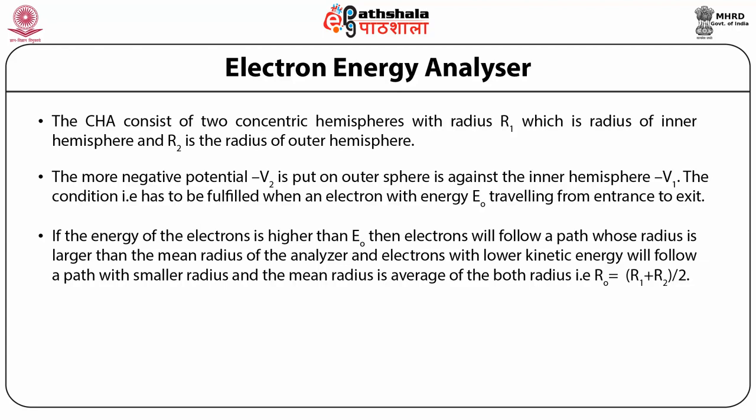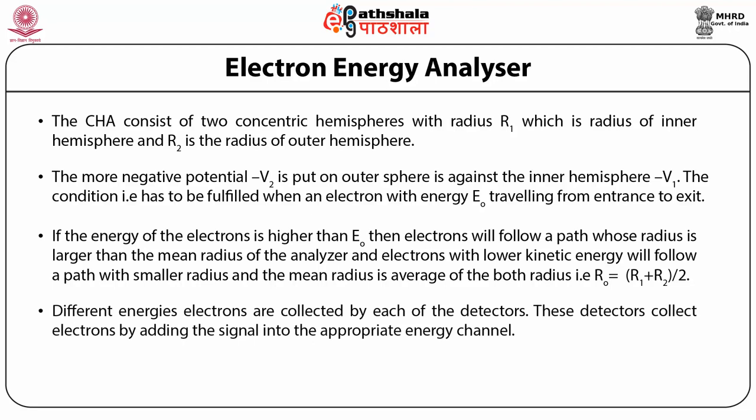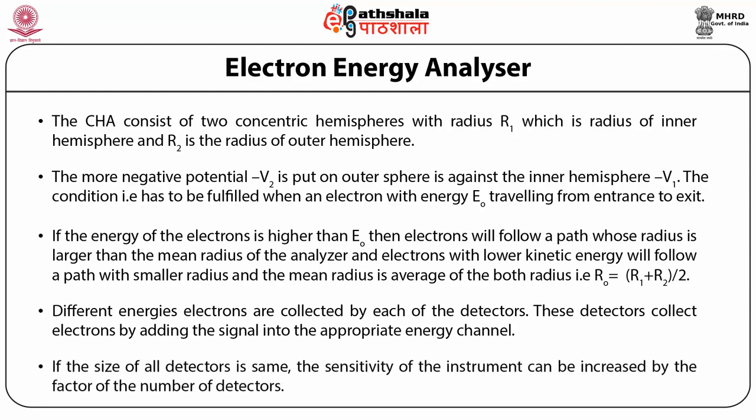If the energy of the electron is higher than E0, electrons will follow a path whose radius is larger than the mean radius of the analyzer. Electrons with lower kinetic energy will follow a path with a smaller radius. At the output plane, a number of detectors are provided. Different energy electrons are collected by each detector, adding the signal into the appropriate energy channel. If the size of all detectors is the same, the sensitivity of the instrument can be increased by a factor equal to the number of detectors.